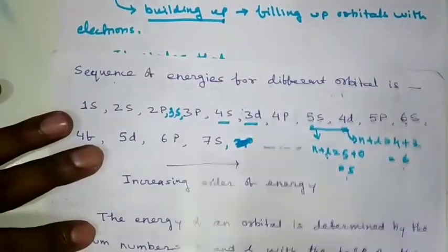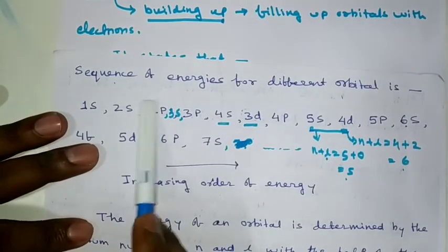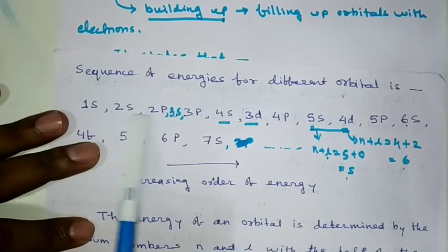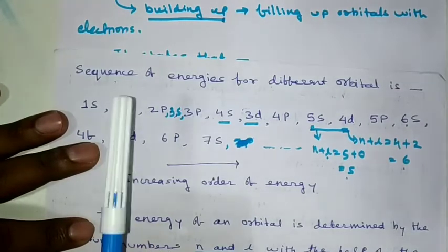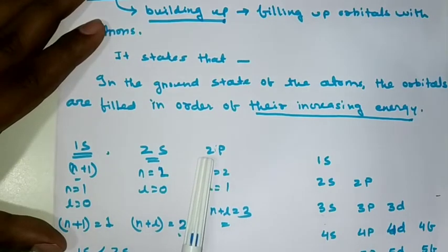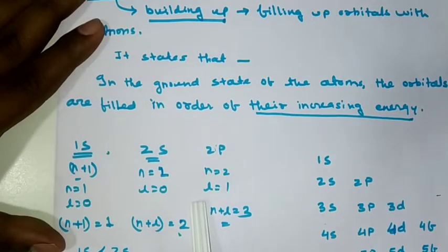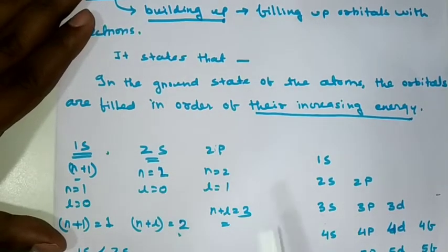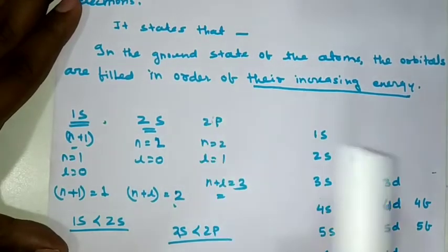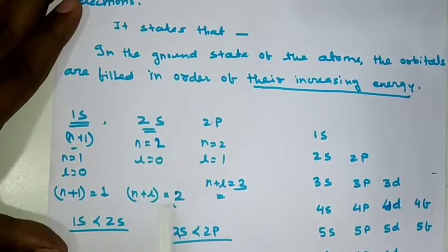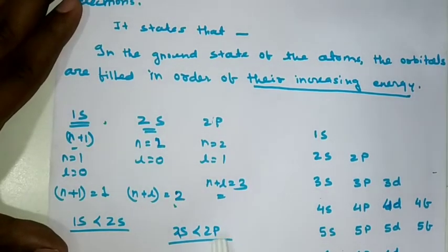Now we can compare the 2s orbital and the 2p orbital energy. Why is the energy of the 2p orbital greater than the 2s orbital? Both orbitals have the same principal quantum number. We can apply the N plus L rule. In the case of the 2p orbital, N is equal to 2, and the azimuthal quantum number L is equal to 1. So N plus L is equal to 3. The N plus L value of the 2p orbital is greater than the N plus L value of the 2s orbital, so the energy of the 2p orbital is greater than the 2s orbital.